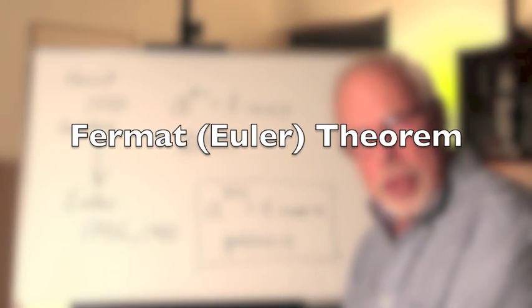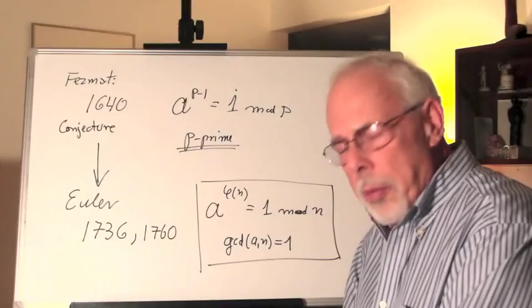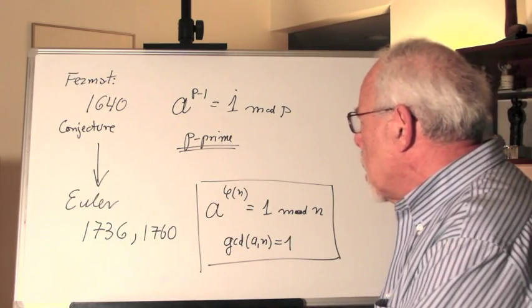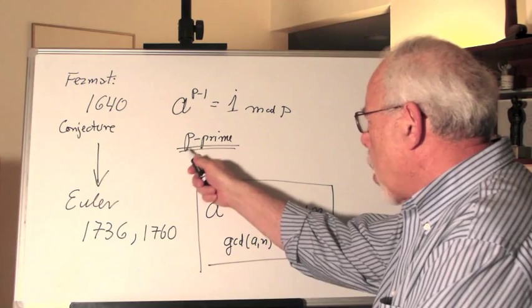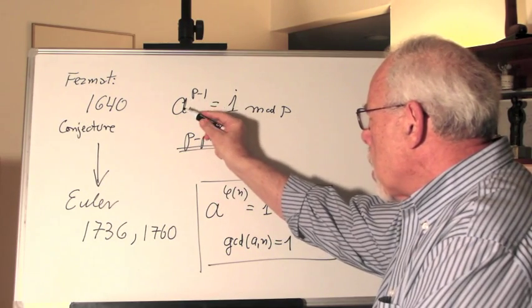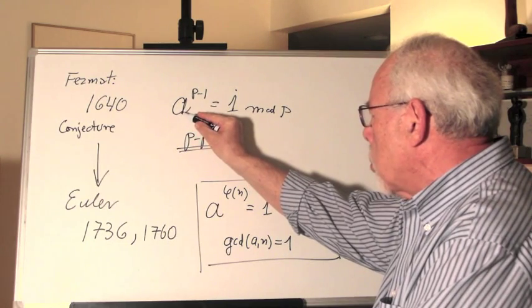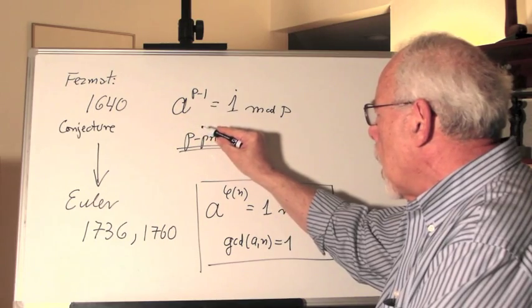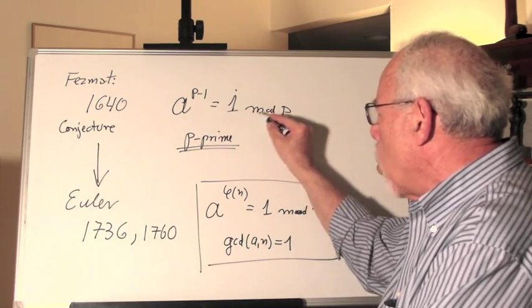In the year 1640, Fermat conjectured the following relationship. For every prime p, take any other natural number, raise it to the power of p-1 and you will get one mod p.